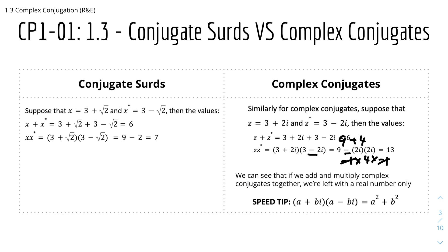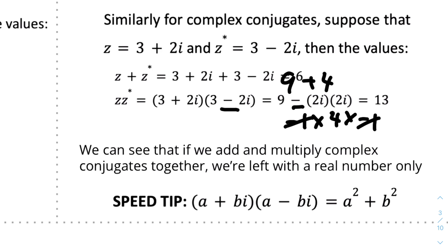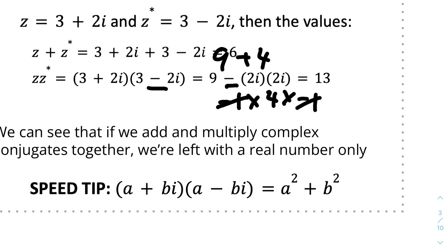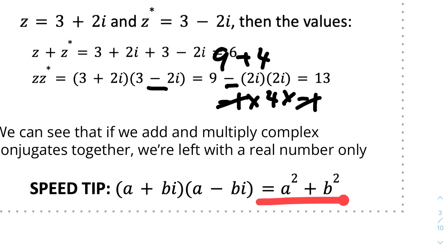Here we have a speed tip to expand a complex conjugate as a difference of two squares: (a + bi)(a - bi) = a² + b². This is a useful shortcut to expand brackets easily, as I mentioned in my last video.